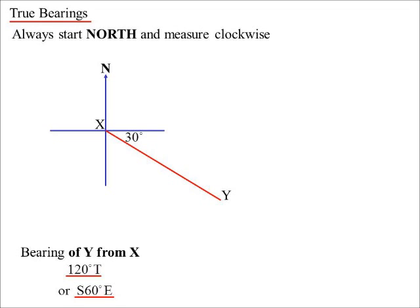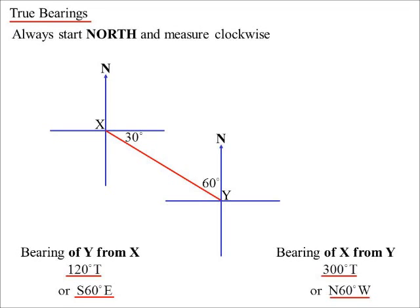If it was the other way around, I want to know the bearing of x from y, so now I put the compass at y. I know that angle is 60 degrees. A bit of geometry can work that out for me. And it turns out to be 300 degrees true bearing. Or as a compass bearing, north, 60 degrees west.